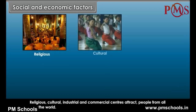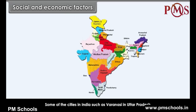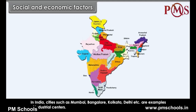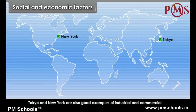Social and economic factors: Religious, cultural, industrial and commercial centers attract people from all over the world. Some cities in India such as Varanasi in Uttar Pradesh, Puri in Orissa, Kanchipuram in Tamil Nadu, and Tirupati in Andhra Pradesh are examples of religious centers. Cities such as Mumbai, Bangalore, Kolkata, and Delhi are examples of industrial centers. Tokyo and New York are also good examples of industrial and commercial centers.